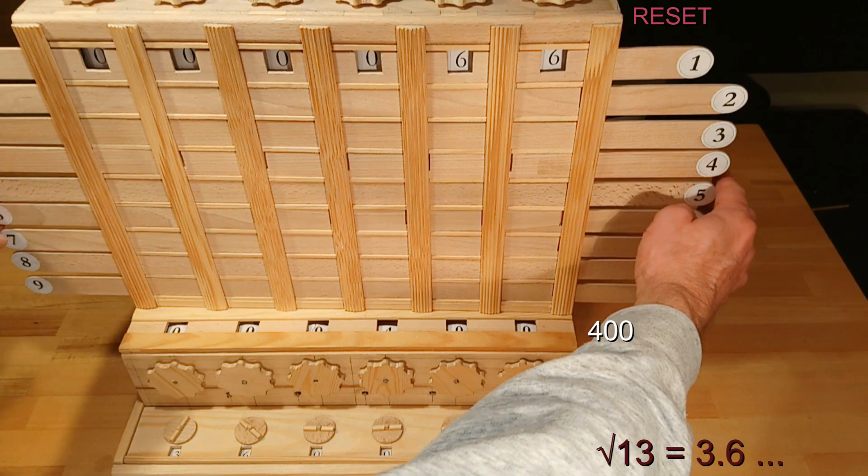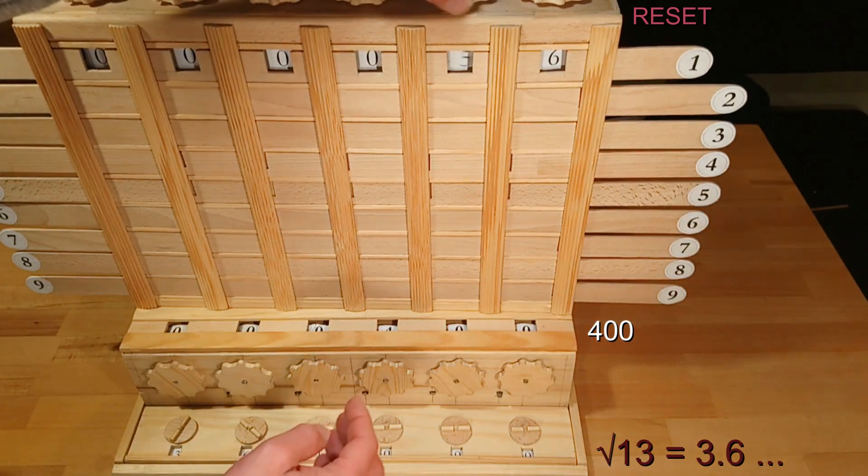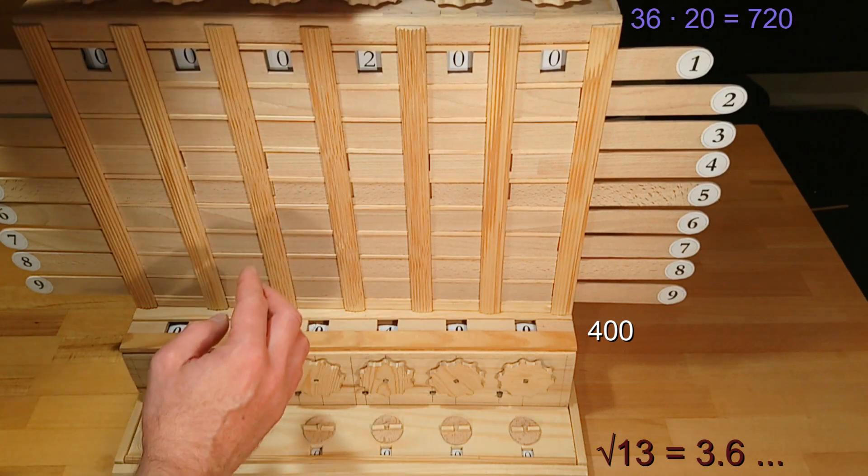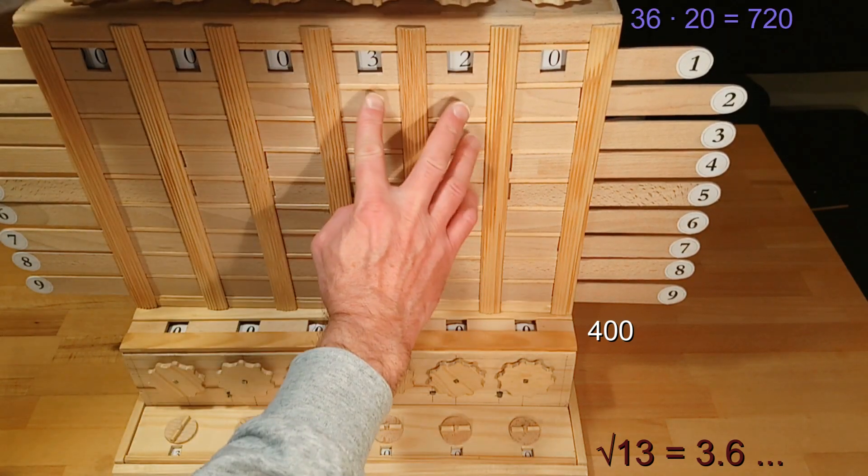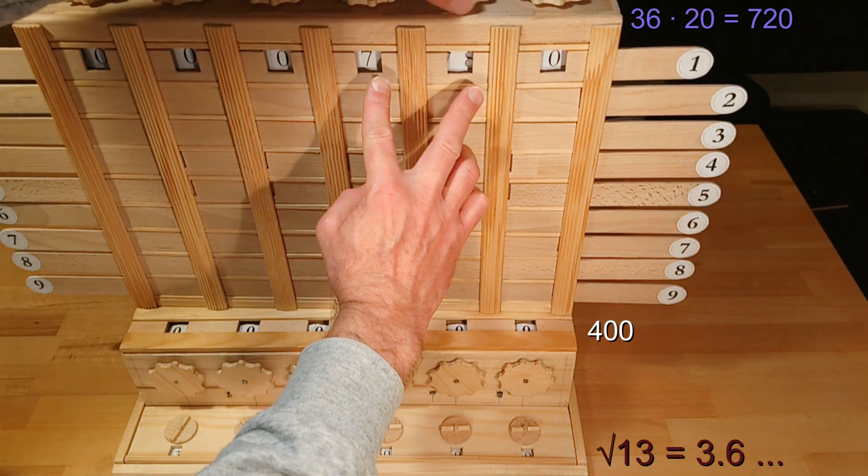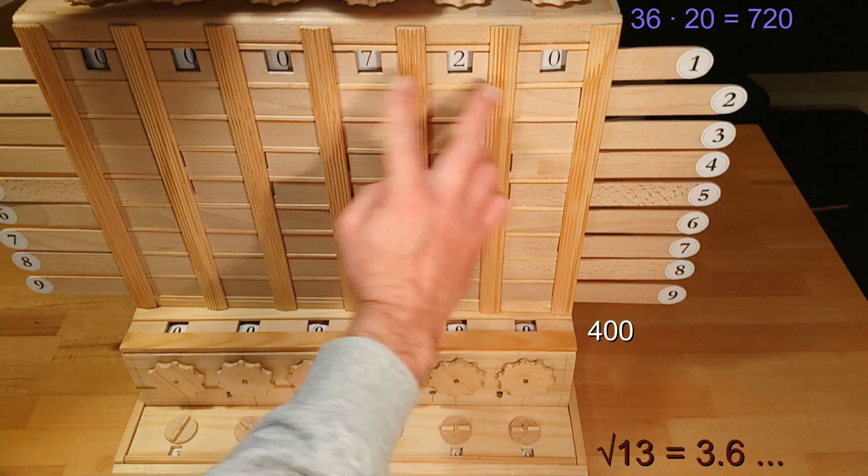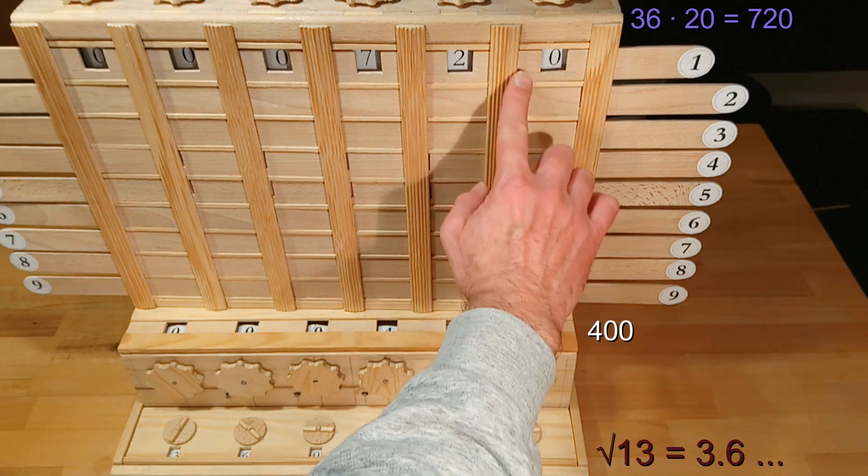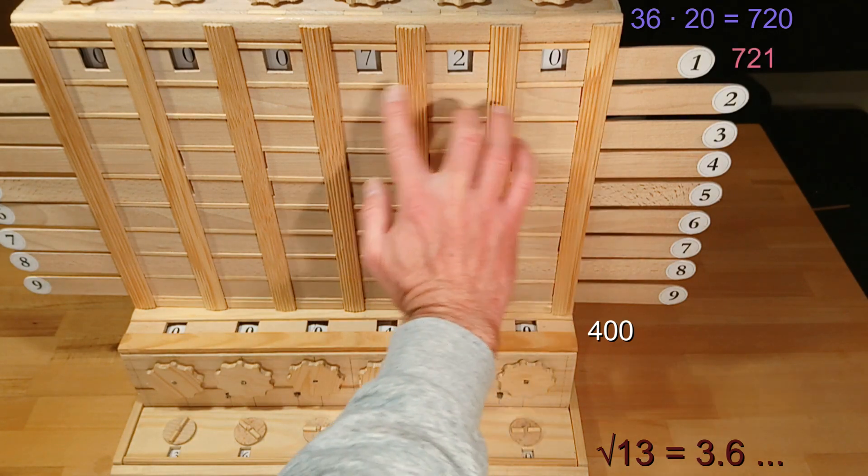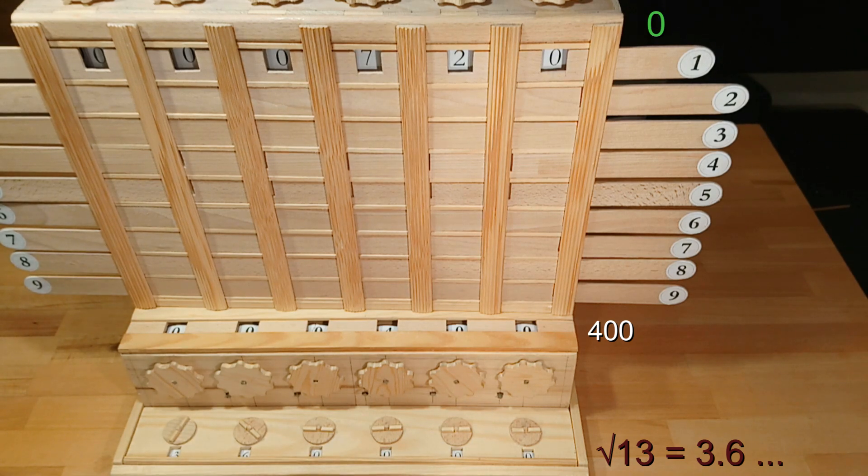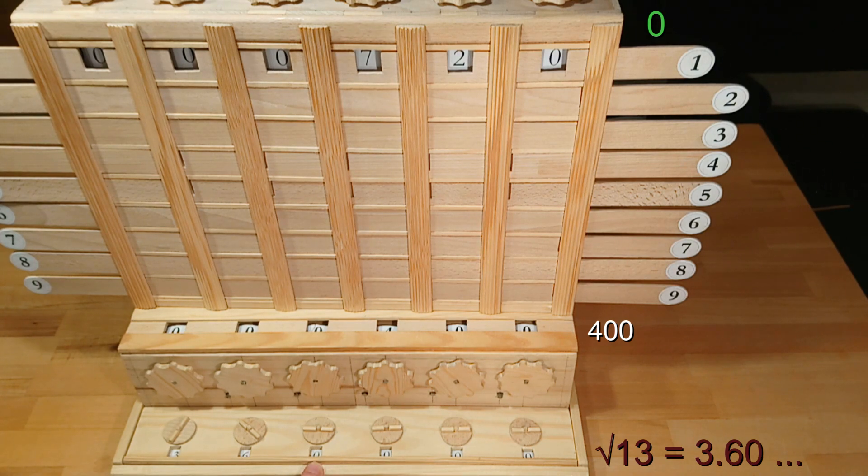Now I'm resetting the multiplier back to 0 and transfer the 36 as 360 and multiply it by 2 which makes 720. We are now searching for the number 720 plus x multiplied by x that is less or equal 400. 1 already would be too much because that would be 721. It's obvious that it's only possible with 0. Therefore the next result digit is 0. We have found 3.60 so far.